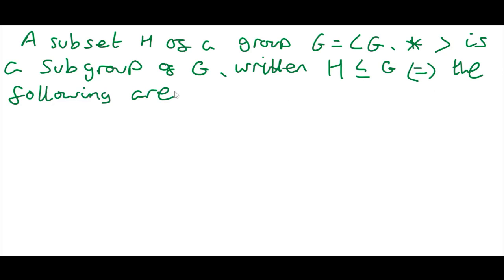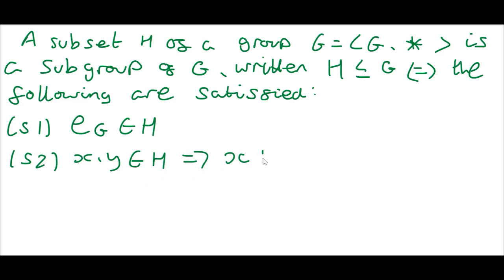I'm gonna give three conditions. S1: the identity element in G is in H. S2: x, y in H implies x star y in H. Note that this is the same binary operation.